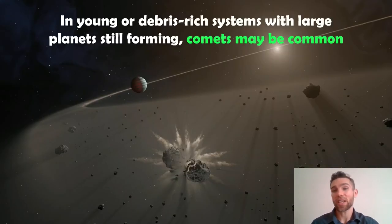So in young systems, debris-rich systems with large planets that are still forming, we would expect comets to be quite common. So if we looked at those young systems, we would expect to find quite a few comets. So they should be there, but how do we actually detect them?